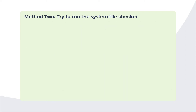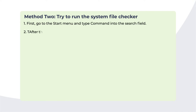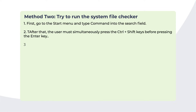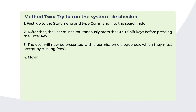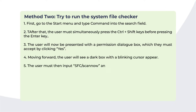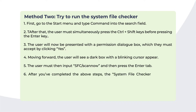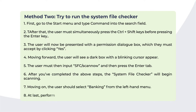Method 2: Run the System File Checker. Go to the Start menu and type 'command' into the search field. Simultaneously press Ctrl + Shift, then press Enter. Accept the permission dialog box by clicking Yes. A dark box with a blinking cursor will appear. Type 'sfc /scannow' and press Enter. The System File Checker will begin scanning; follow on-screen instructions to proceed further.